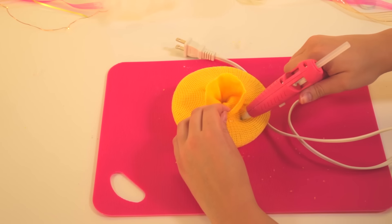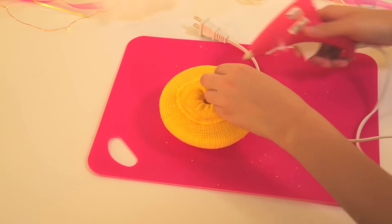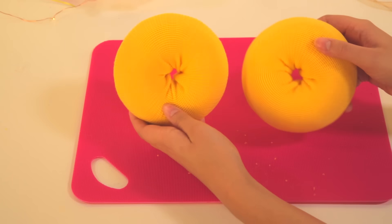Now use a hot glue gun to glue the last inch. Repeat for the second donut.